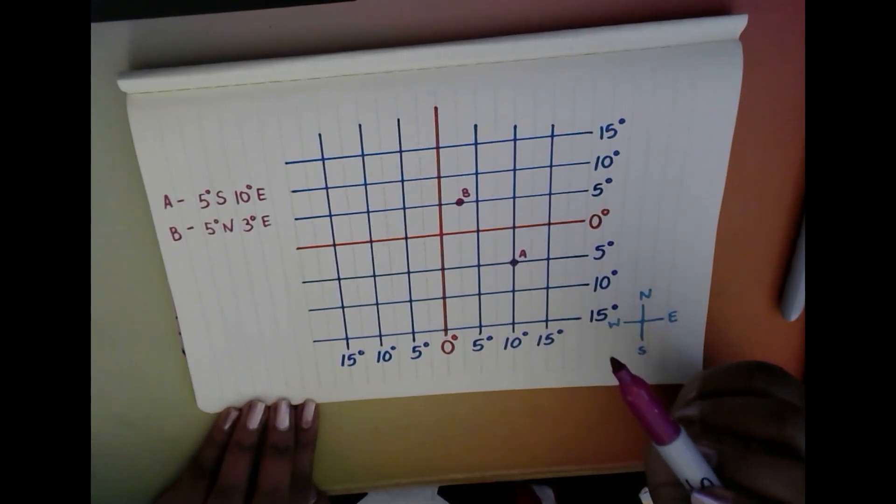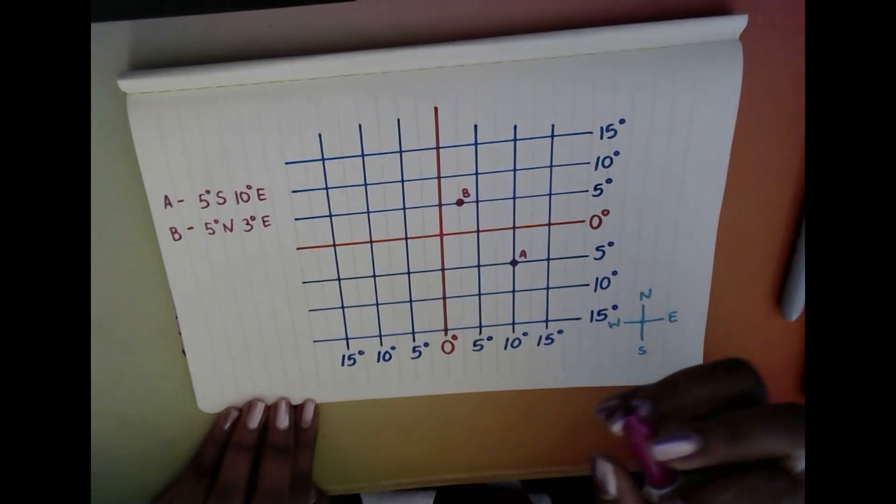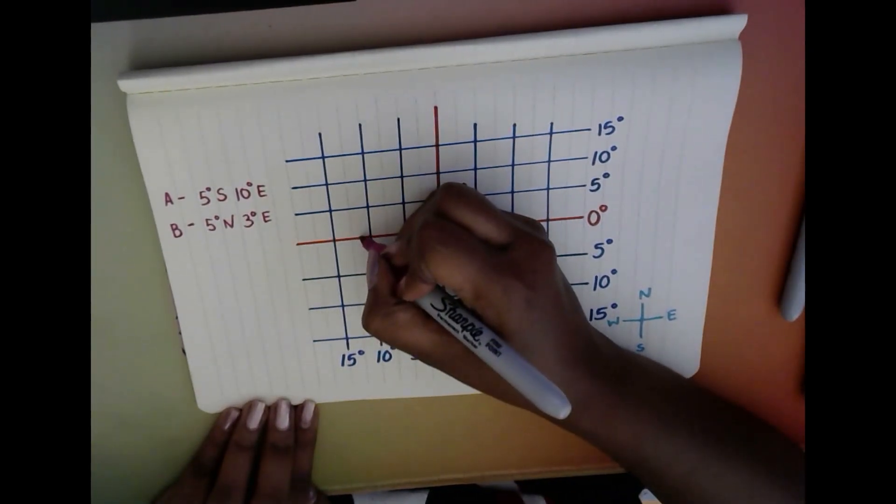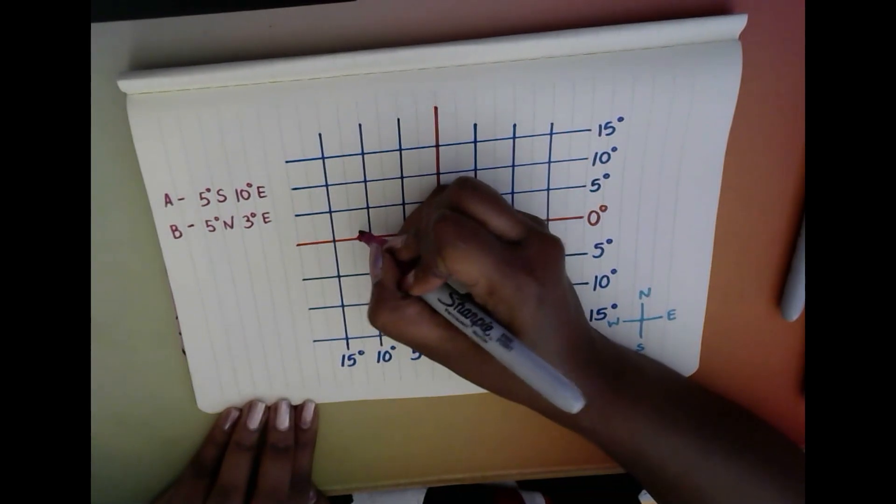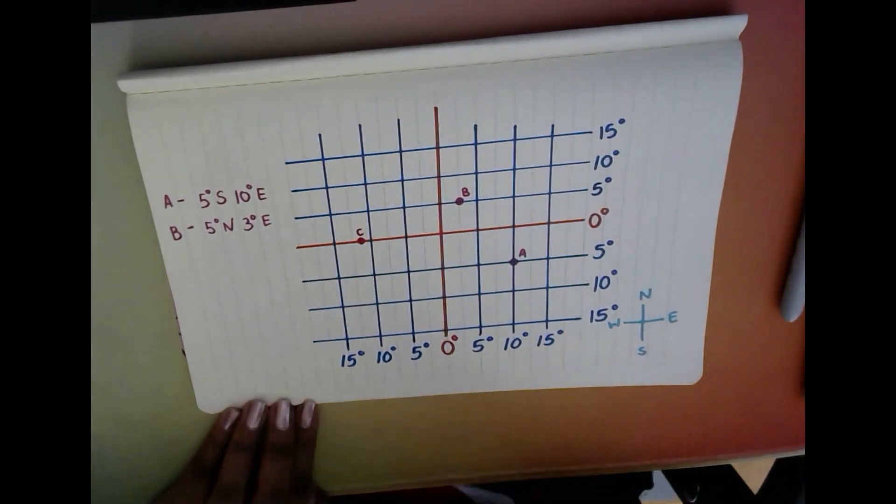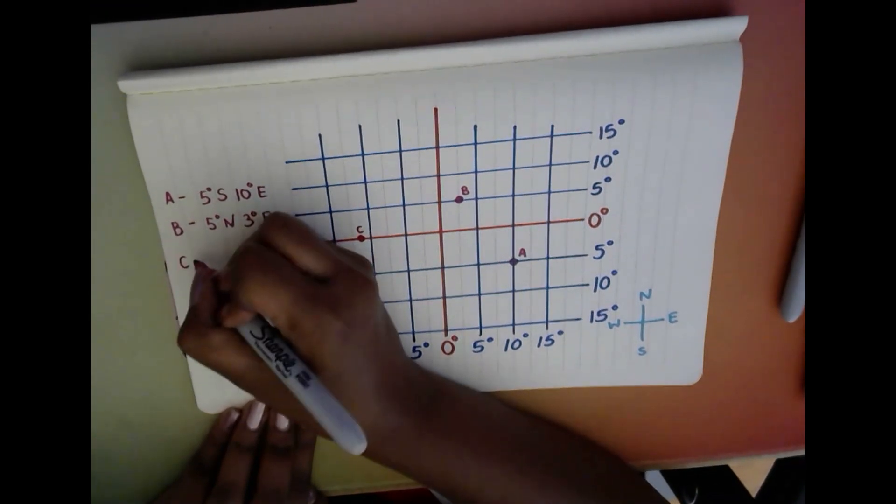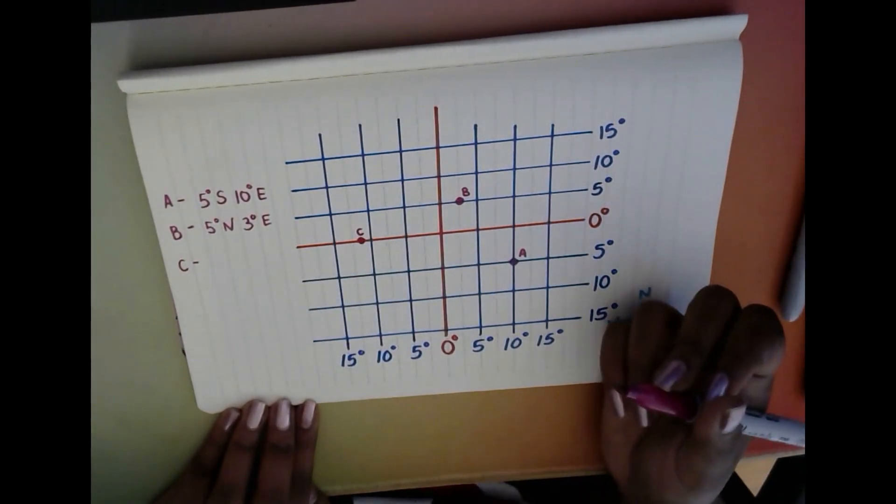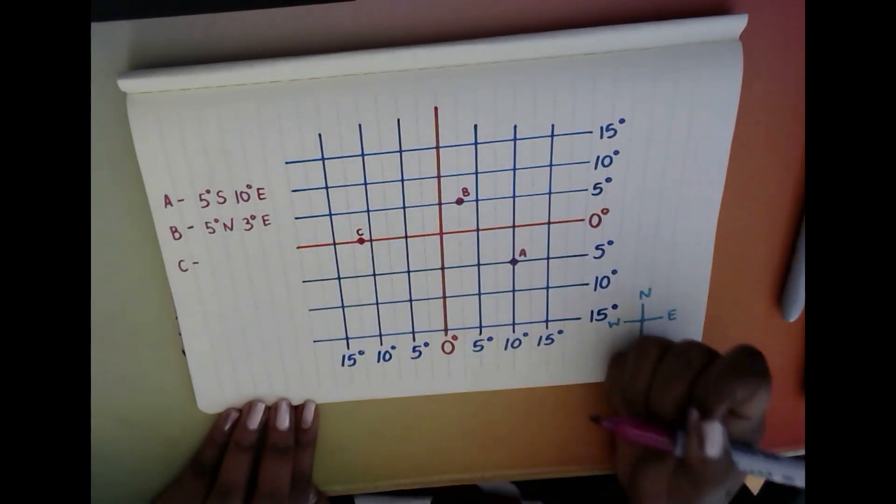Alright, then just one more quick example. I'm going to put a dot over here. We're going to call this one C. Now the reason why C is interesting is because the first question is: is C in the north or the south?